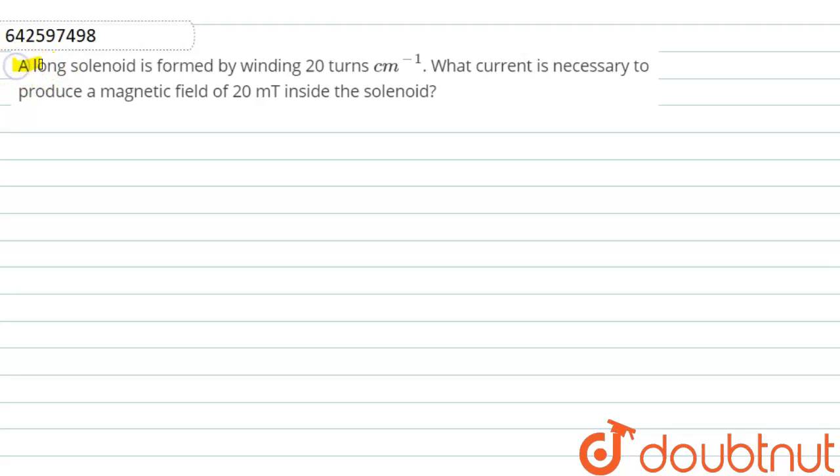Students, the question is: A long solenoid is formed by winding 20 turns per centimeter. What current is necessary to produce a magnetic field of 20 millitesla inside the solenoid?